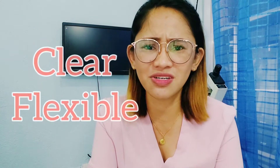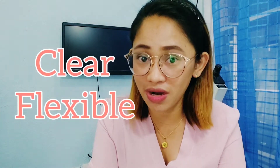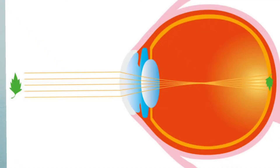And our lens is supposedly and naturally transparent and flexible. Yung lente ng mata natin guys, dito dumadaan yung rays of light papunta sa ating retina. And sa retina, dun yung image na nabubuo.